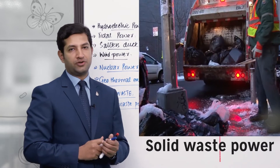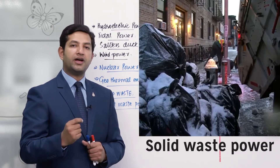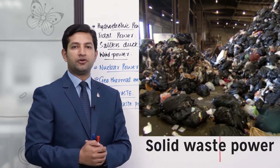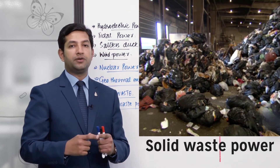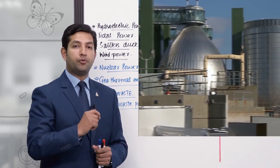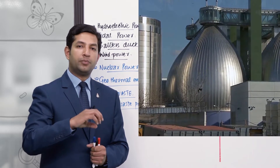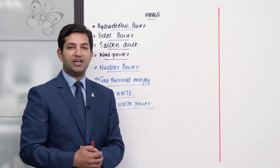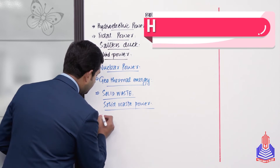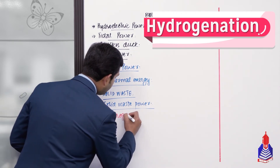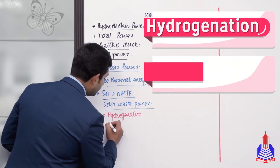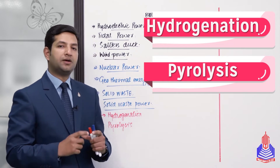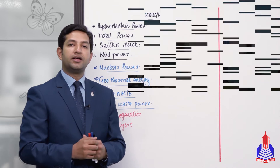Now this term 'solid waste power' has been used here intentionally, because if we think carefully, things we consider garbage and throw away — some thoughtful people have found a way to generate energy from that too. First, if we talk about agricultural practices, there is great efficiency here. Compost can be made, or the slurry produced later can be used as organic manure in fields. The basic technique for its production involves — all of this is waste — and the term we are writing here is pyrolysis, meaning thermal breakdown is performed.